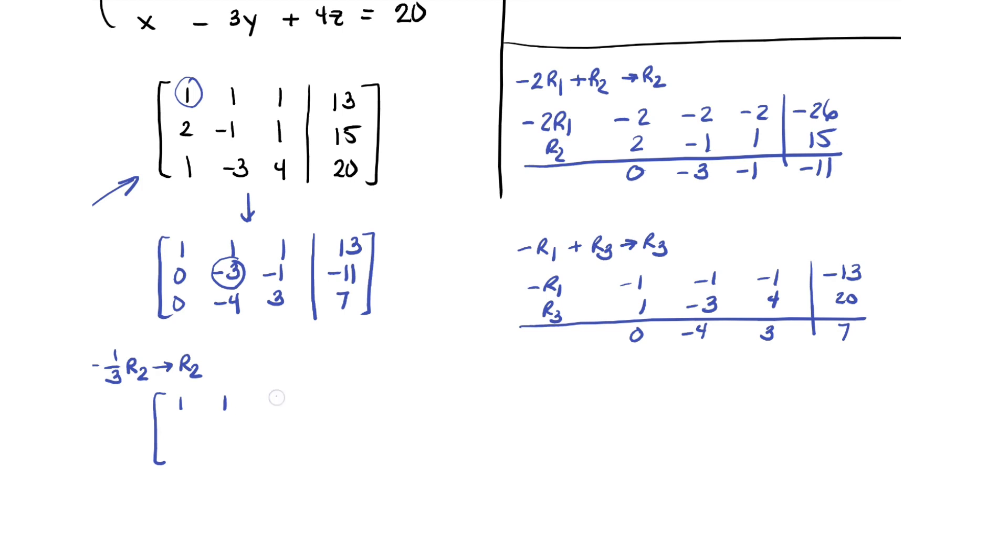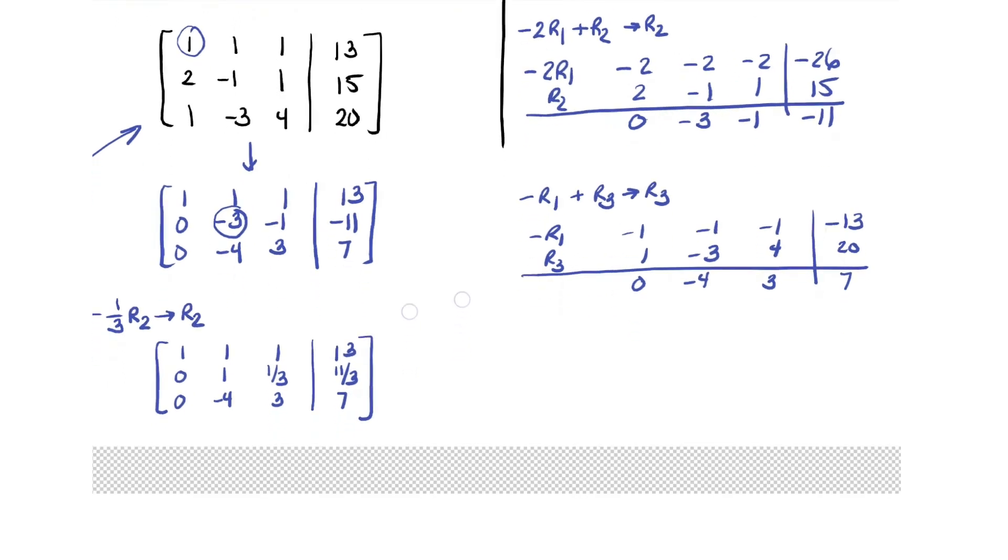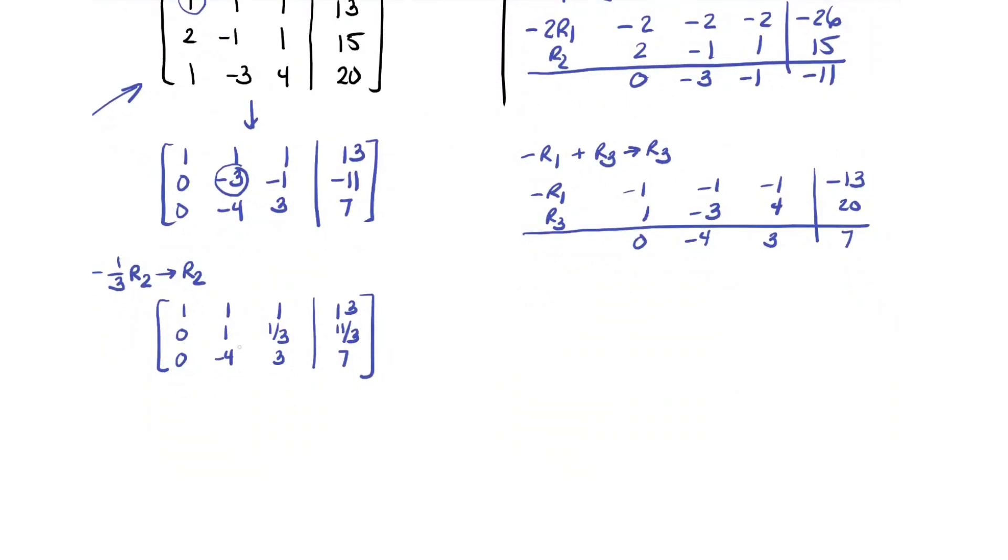So I'm going to take negative 1 third R2 and make that my new R2. So first row stays the same. Now with my second row, that's going to be 0, 1, 1 third, 11 thirds. I know fractions are usually not desirable, but it's not too bad at this point. So there's our new matrix after that row is multiplied.